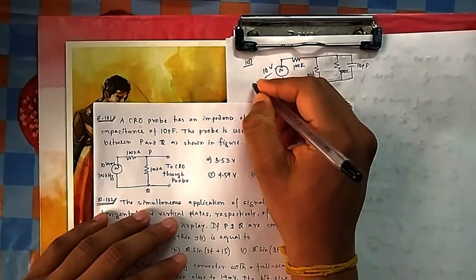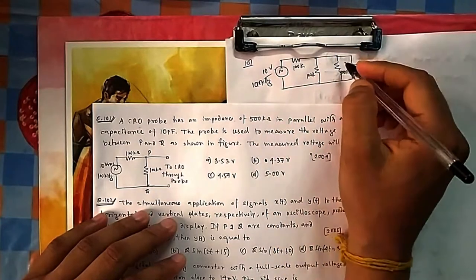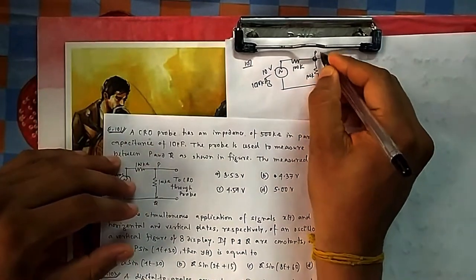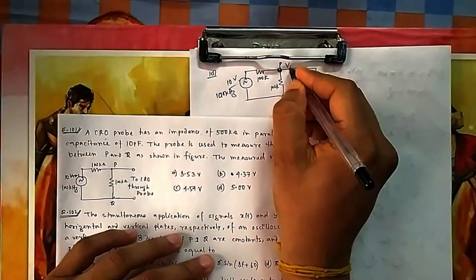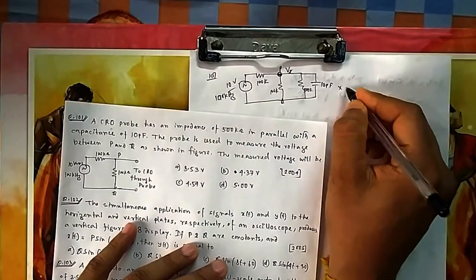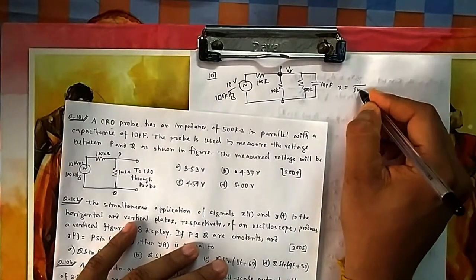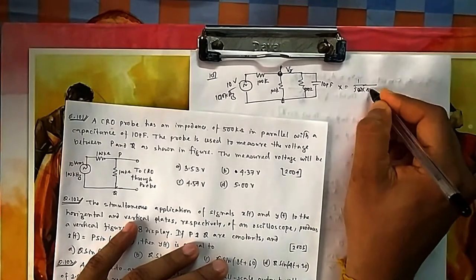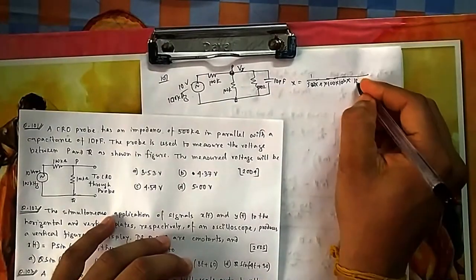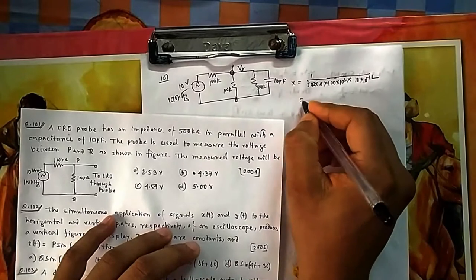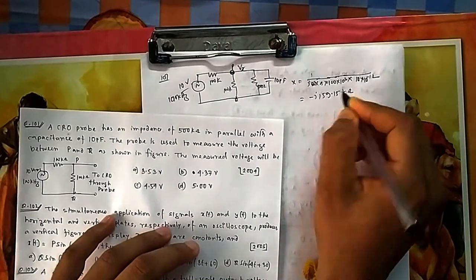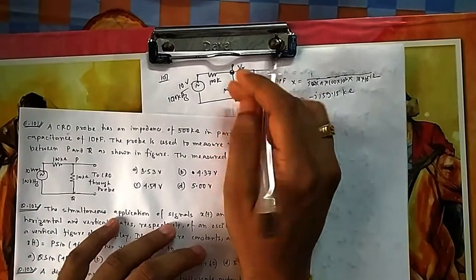The frequency is 100 kHz. We need to find the voltage V_PQ that the probe measures. The capacitive reactance Xc equals 1/(j·2π·f·C), where f = 100×10³ Hz and C = 10 picofarad = 10×10⁻¹² F. This gives Xc = −j159.15 kΩ.